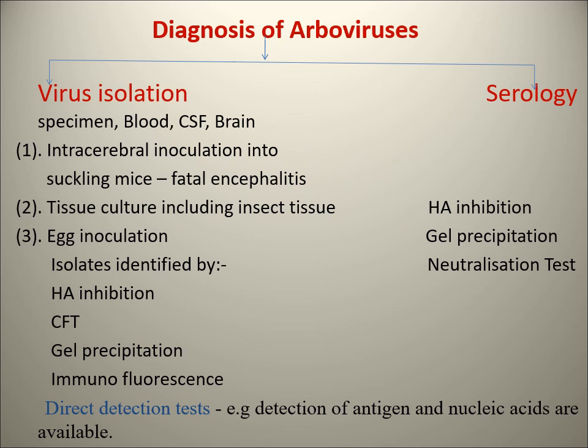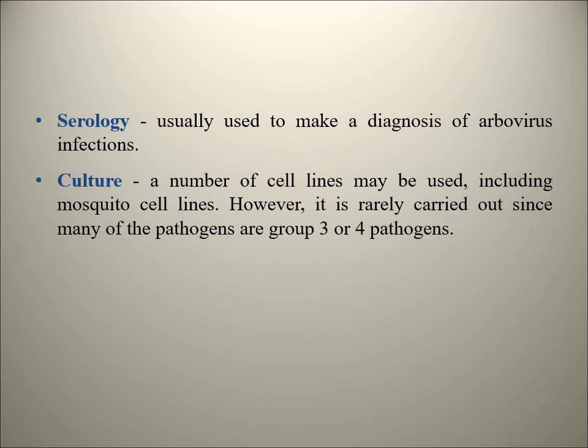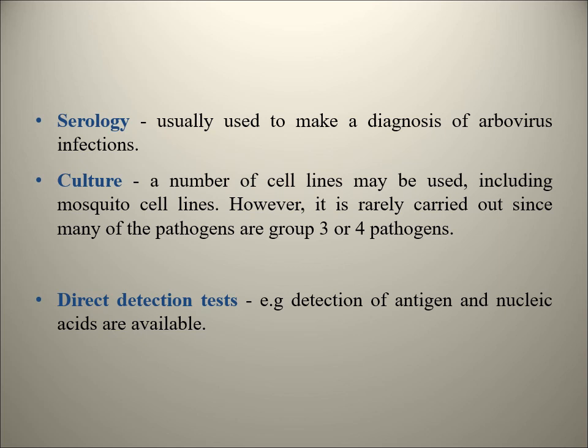For diagnostic purposes: antigen detection can be done directly - for example in Dengue the NS1 antigen test is used. Antibody detection by serology uses the ELISA test - for example in Chikungunya we use MAC-ELISA. For molecular methods, since arboviruses are RNA viruses we can use Reverse Transcriptase PCR (RT-PCR). That is the ideal method currently.